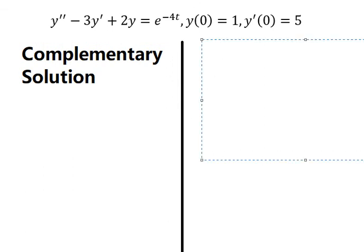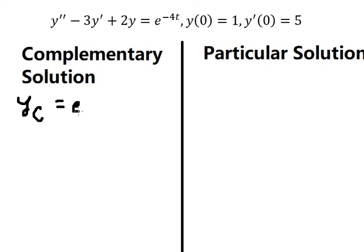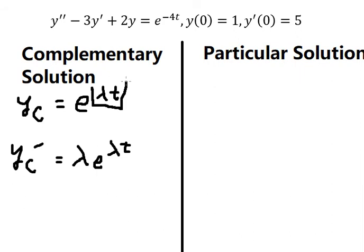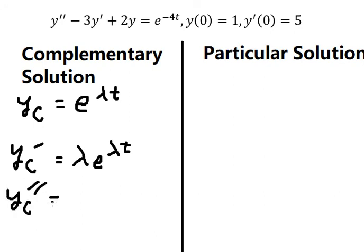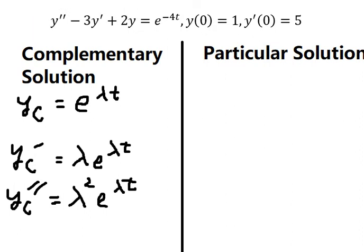For the complementary solution, I will put yc equals e to the power of λt. If we do the first derivative of this, we have λ·e^(λt). Then the first derivative of λt gives λ. Now doing the second derivative, you get λ²·e^(λt).